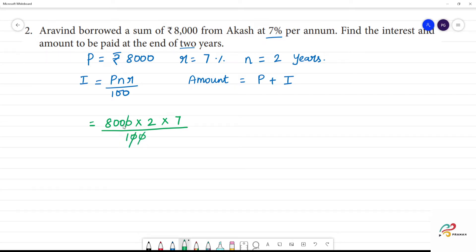When the zeros cancel, 80 times 2 times 7. 160 times 7. 6 times 7 is 42, remainder 4. 1 times 7 is 7, plus 4 is 11. So,